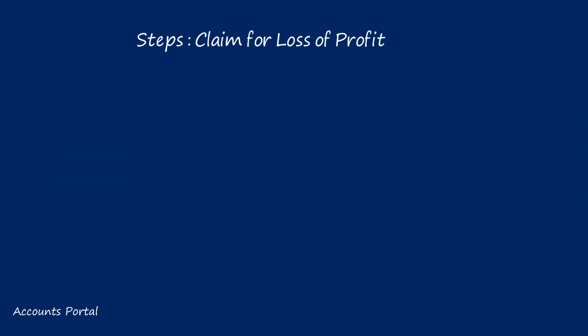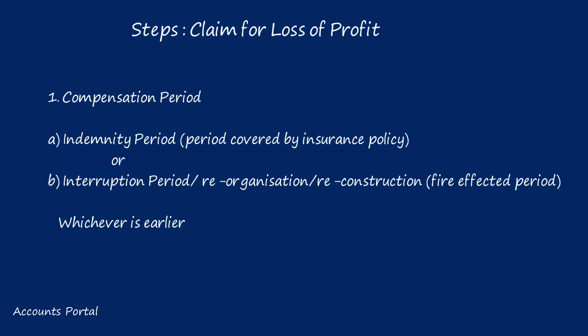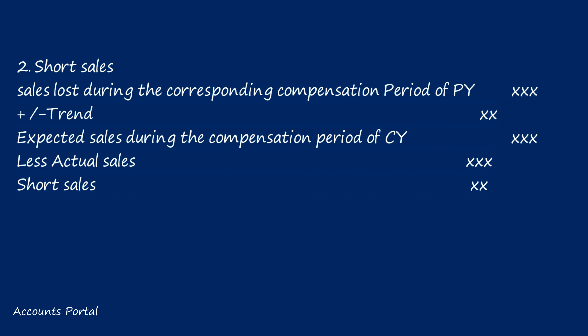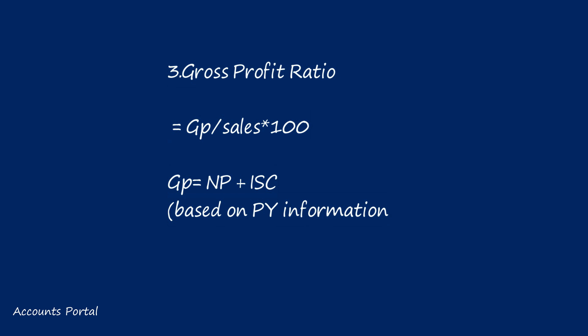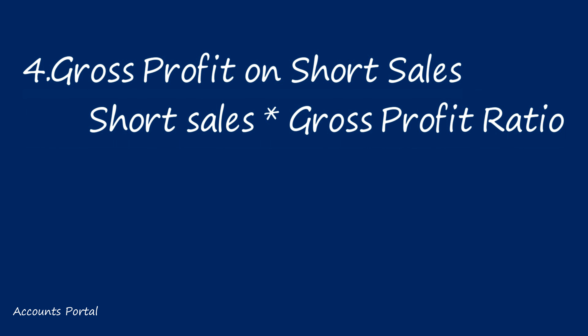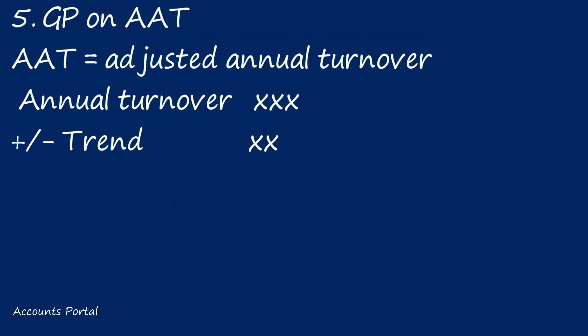The claim for loss of profit involves eight steps. Step one: compensation period — indemnity period or interruption period, whichever is earlier. Step two: short sales — sales during the corresponding compensation period of the previous year, plus or minus trend, gives expected sales during the current year's compensation period; less actual sales gives the short sales. Step three: gross profit ratio equals gross profit divided by sales into 100, where gross profit means net profit plus insured standing charges. Step four: gross profit on short sales equals short sales into gross profit ratio.